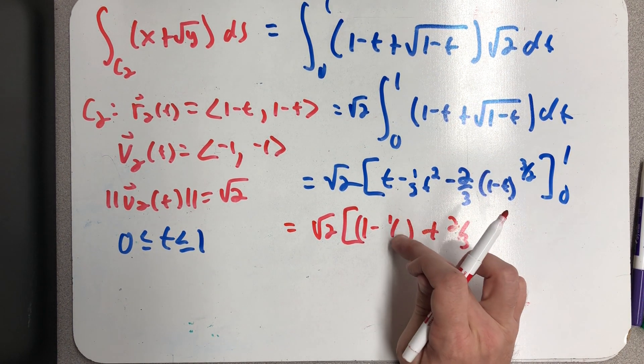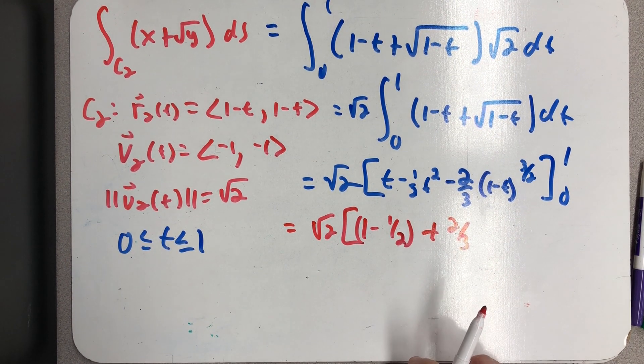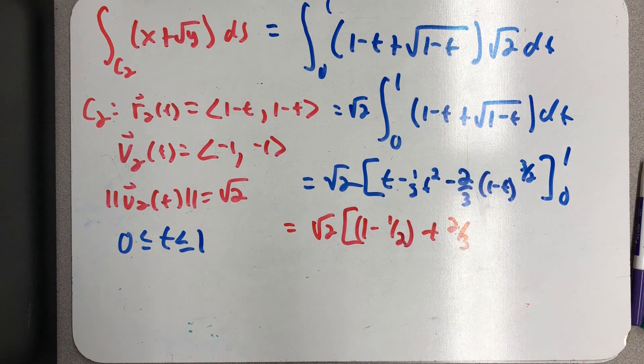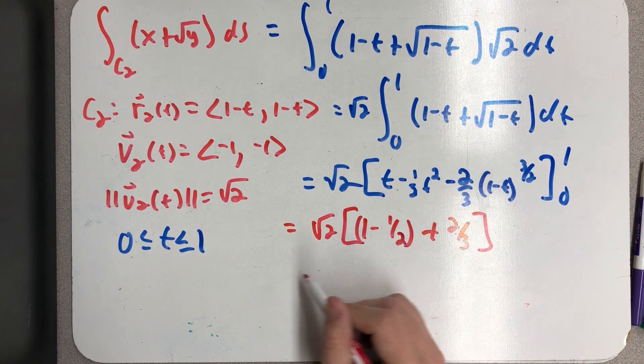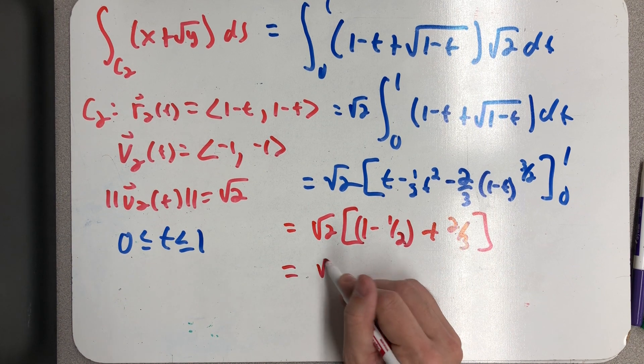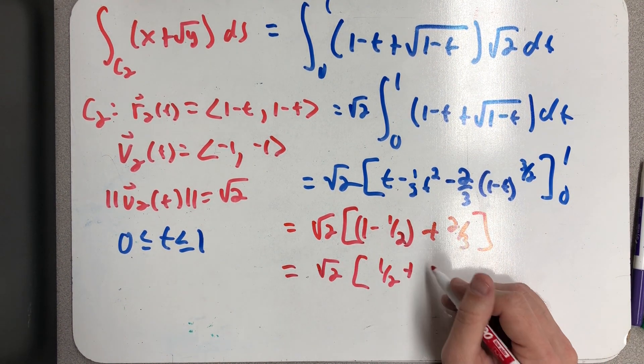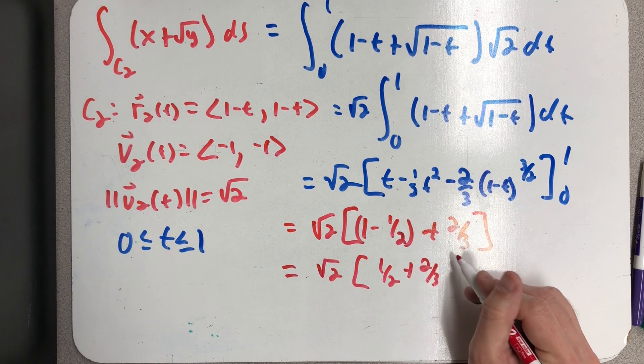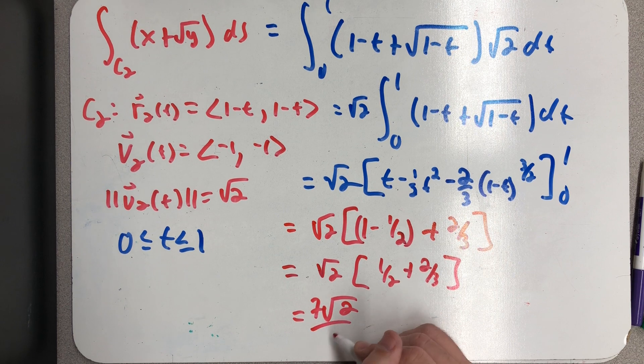Oops, that was a one half. Couldn't read my own handwriting there. Oh well, we're just going to leave that in there. So 1 - 1/2 + 2/3. √2 is 1/2, excuse me, √2 times 1/2 + 2/3. And we end up with 7√2/6.